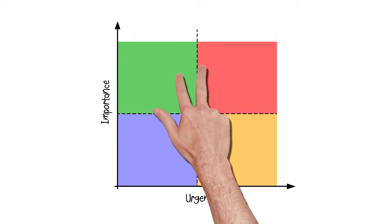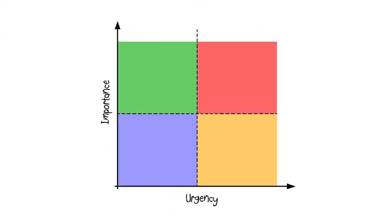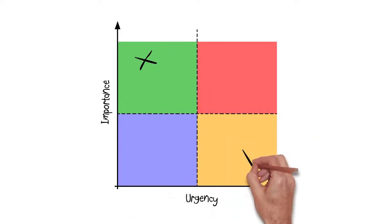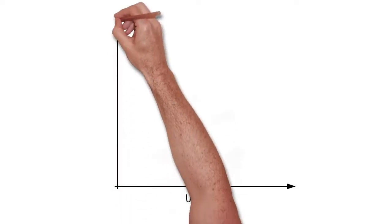Back to the matrix. The prioritisation matrix is a powerful tool. Quite simply, it plots tasks, helping to quickly establish which tasks are important and which are urgent or which are neither or which are both. Now, pay attention, Leon. From low to high, this line shows the urgency of a given task and this one from low to high, the importance.